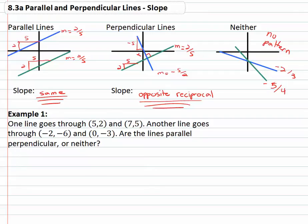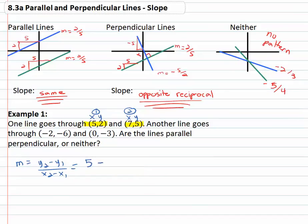For example, if we know one line goes through the points (5, 2) and (7, 5), we can find its slope. Using m = (y₂ − y₁) / (x₂ − x₁), we get: y₂ = 5 minus y₁ = 2 over x₂ = 7 minus x₁ = 5. Five minus two is three, seven minus five is two, so the slope of the first line is three-halves.